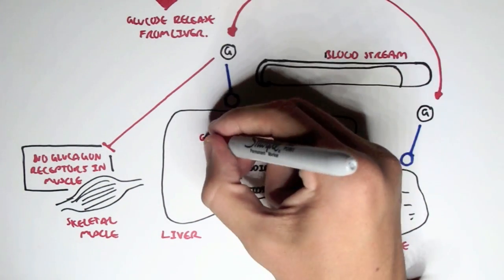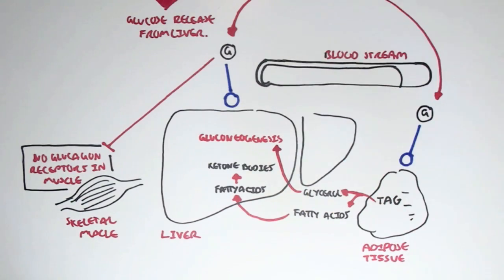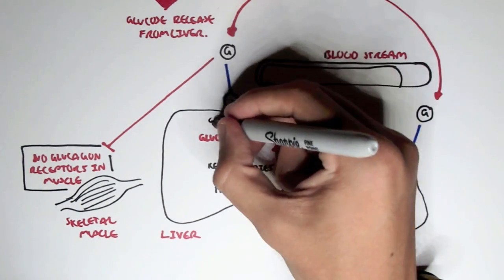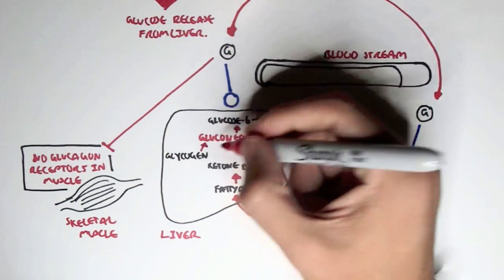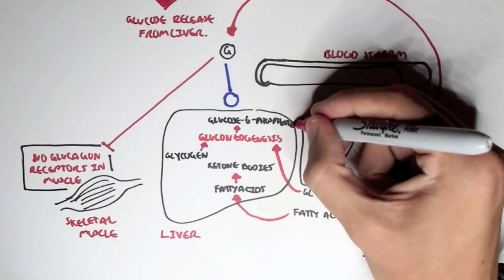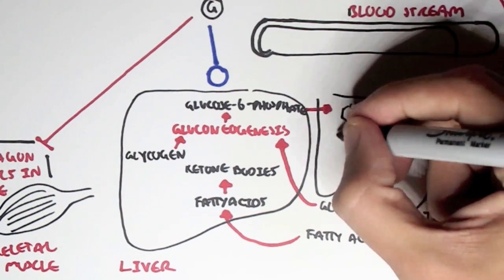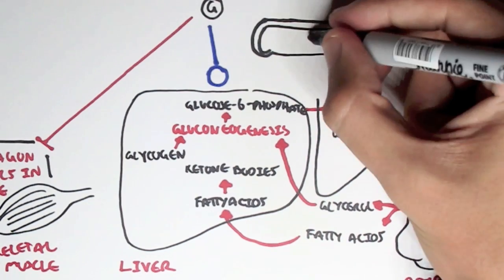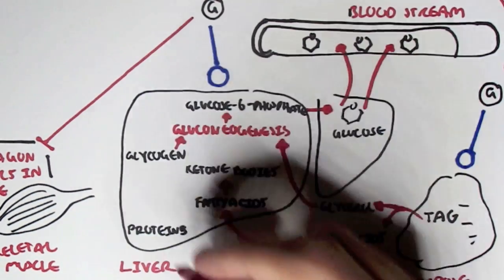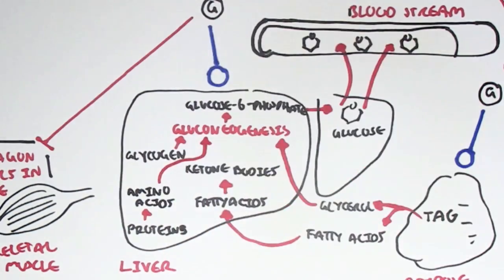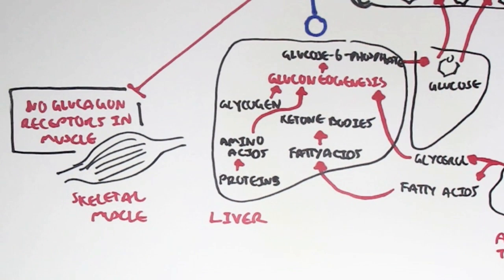Glucagon will also promote gluconeogenesis to make more glucose. The liver now has glycerol, and glycerol can go through gluconeogenesis to be converted to glucose-6-phosphate. Glucagon also promotes the breakdown of glycogen via gluconeogenesis as well to make glucose-6-phosphate, which can then be converted to glucose. The liver then secretes glucose into the bloodstream to increase blood glucose levels. Other proteins in the liver can go via proteolysis to make amino acids, which can then be fed into gluconeogenesis to make glucose-6-phosphate and then glucose — this is also promoted by glucagon.